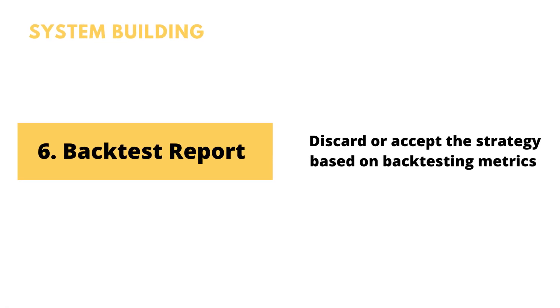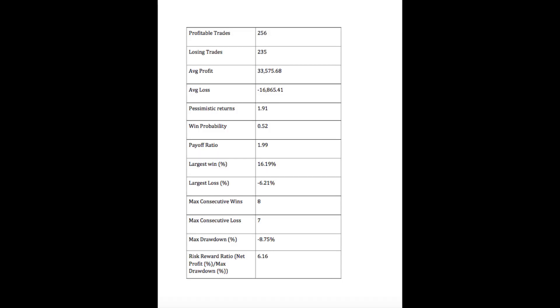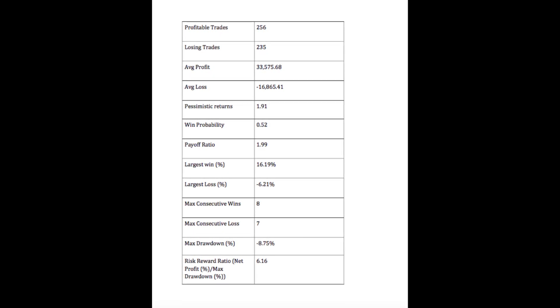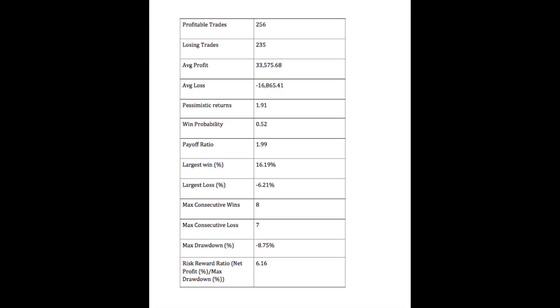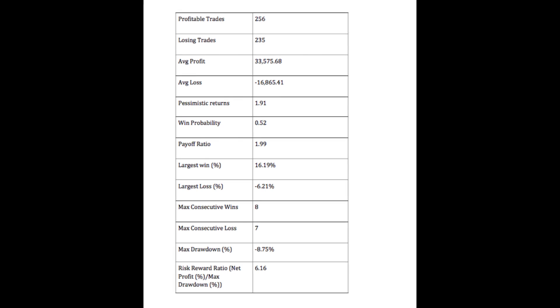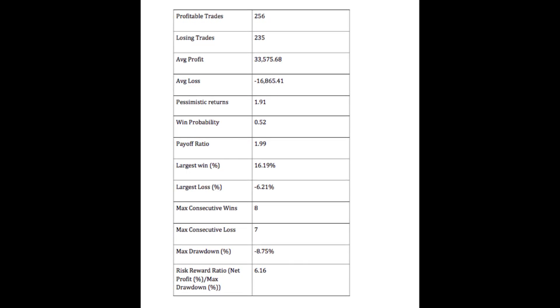The sixth point, which is important, is the backtest report. Backtesting helps you discard or accept your strategy depending on a few metrics. The few important metrics, as you can see on the screen, are max drawdown amount — as discussed, a loss of 20% means you need 25% just to break even, so you need to make sure your drawdown is within your risk limit. I prefer a drawdown of less than 20% for my strategy. Another important point is payoff ratio — you should make more money when you are right than you lose when you are wrong. The payoff ratio should be greater than 1.5, meaning on a winning trade you make 1.5 times the risk you took. There are many more such terms in backtesting which I'll explain in further videos, as backtesting itself is a very big concept.